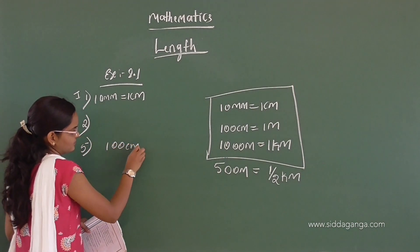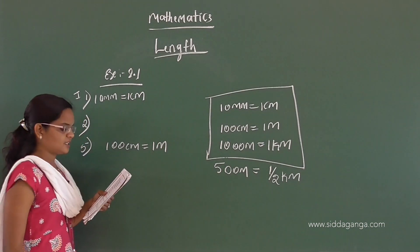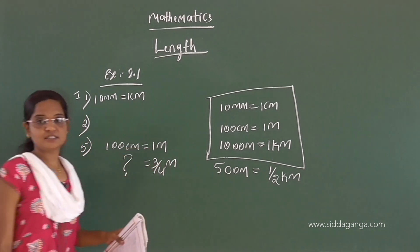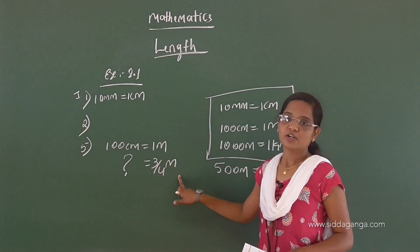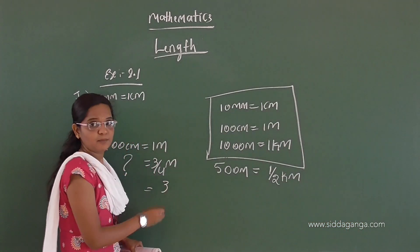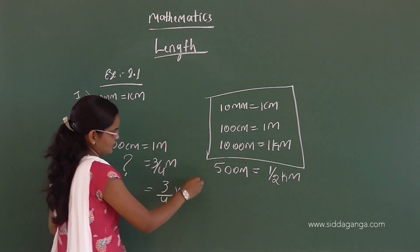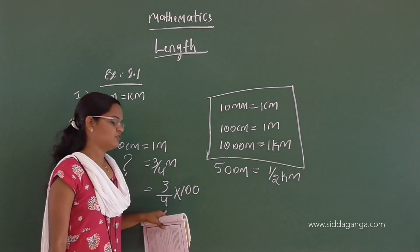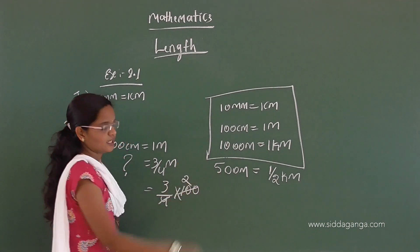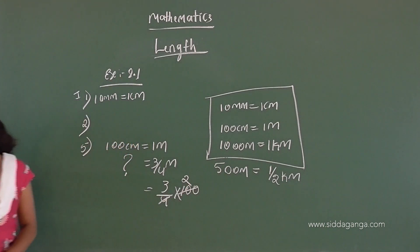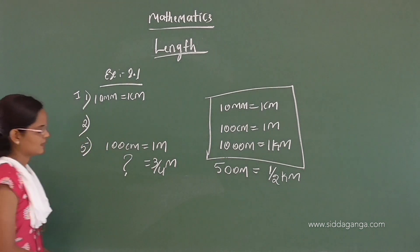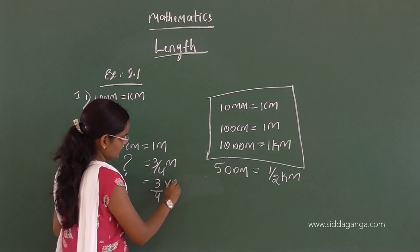100 centimeters means 1 meter. So 3/4 meter means how many centimeters? 3/4 into 100. We divide and multiply: 3/4 into 100 means 100 divided by 4. I will show you how to solve this type of problem. 3/4 into 100 — we can simplify 100 and 4.